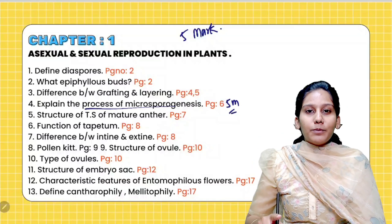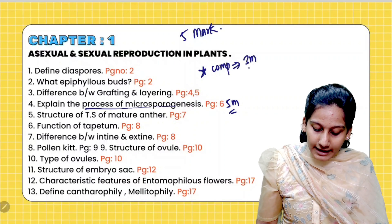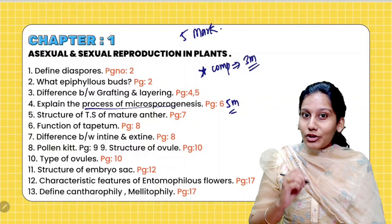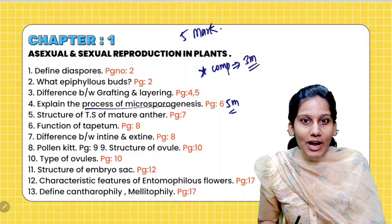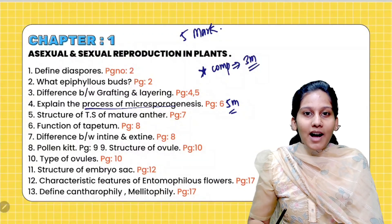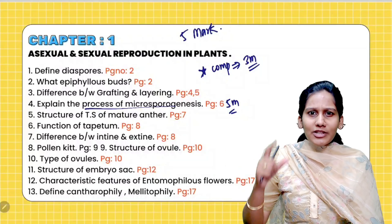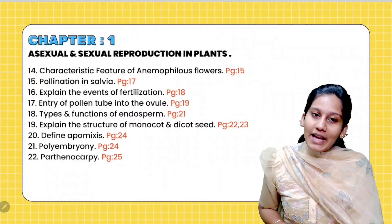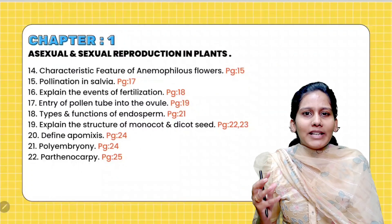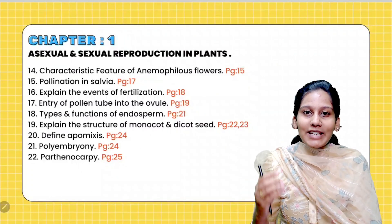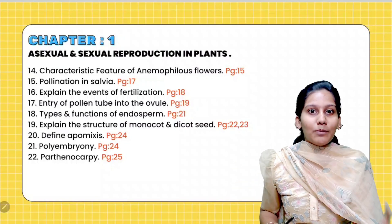In this chapter, most important — there is a compulsory question called a three-mark diagram-based question: the structure of ovule. So the two most important questions asked in this chapter in Public 2024. You can take a screenshot. In the second half of the chapter, there are characteristics in pollination — that is the most important.